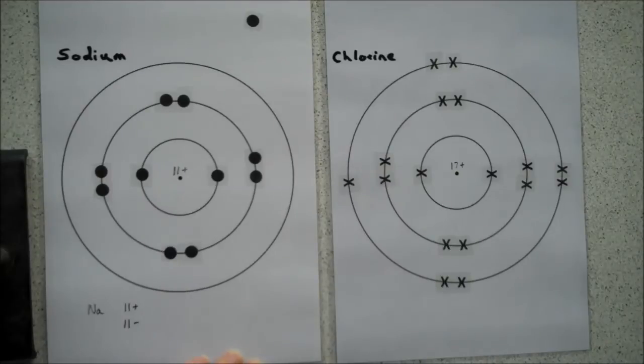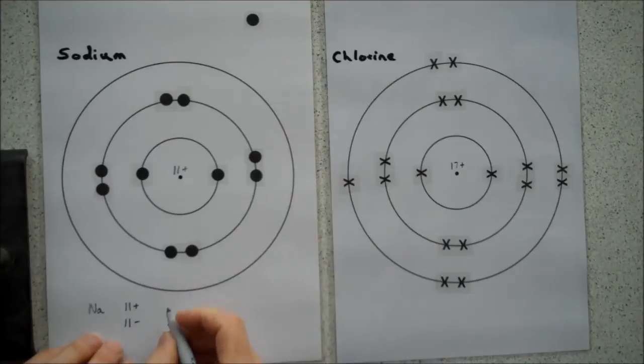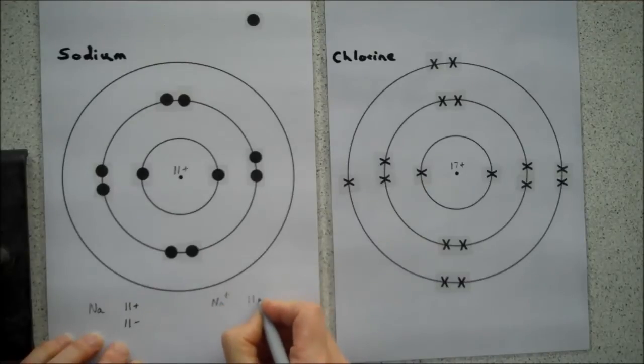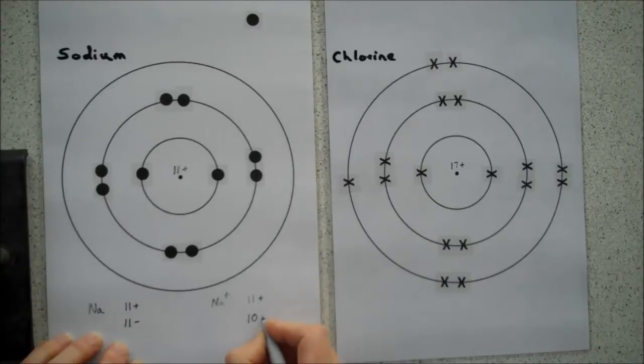It will now be a sodium ion. Now, what's happened to it? Well, if it's lost an electron, we are now making a sodium plus ion. Why is it positive? Well, we've still got 11 protons in the nucleus, but now we've only got 10 electrons. So overall, we've got one more proton than electron, and that means we've got a charge of plus 1.